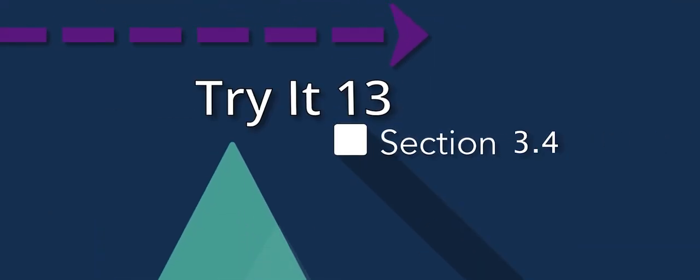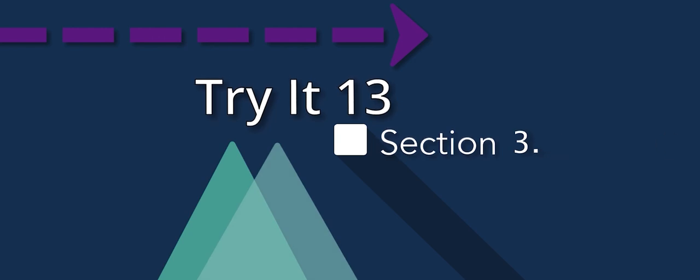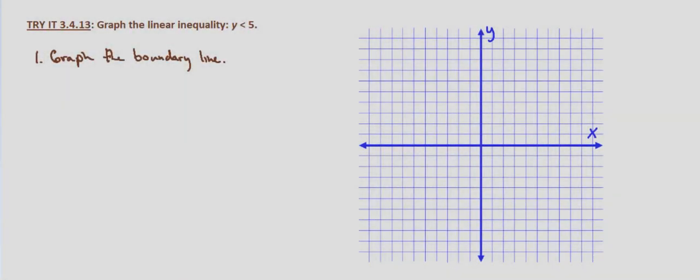In this problem we are asked to graph the linear inequality y is less than 5. Our first step is still the same: graph the boundary line y equals 5. That's a horizontal line at y equals 5.